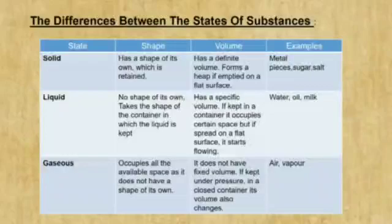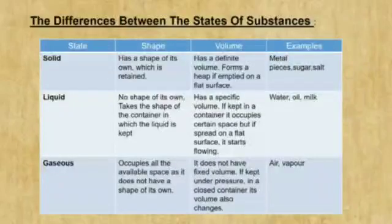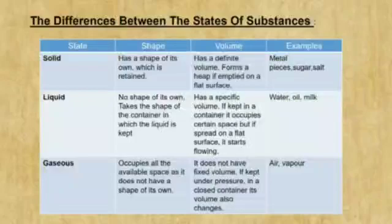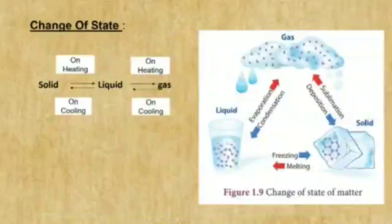Liquid does not have a shape of its own. It takes the shape of the container in which the liquid is kept. Liquid has a specific volume. If it is kept in a container, it occupies the shape of the container, but if it is spread on a flat surface, it starts flowing. For example, water, oil, milk. Whereas gaseous occupies all the available space as it does not have a shape of its own. It does not have a fixed volume. If kept under pressure in a closed container, its volume changes. For example, air and vapour.